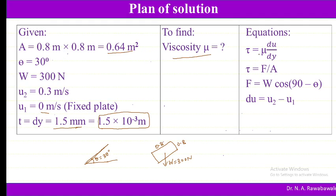To find mu using tau = mu × du/dy, we need tau and du. The velocity difference du = u2 − u1 = 0.3 − 0 = 0.3 m/s. The force making the plate move along the inclined plane is F = W × cos(90° − theta) = 300 × cos(60°) = 150 N. Shear stress tau = F / Area = 150 / 0.64.